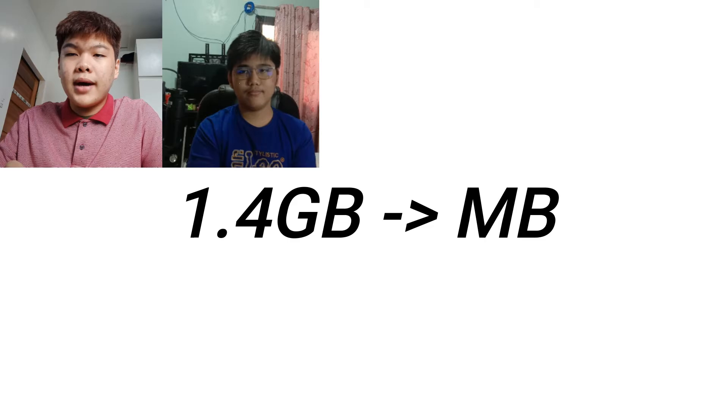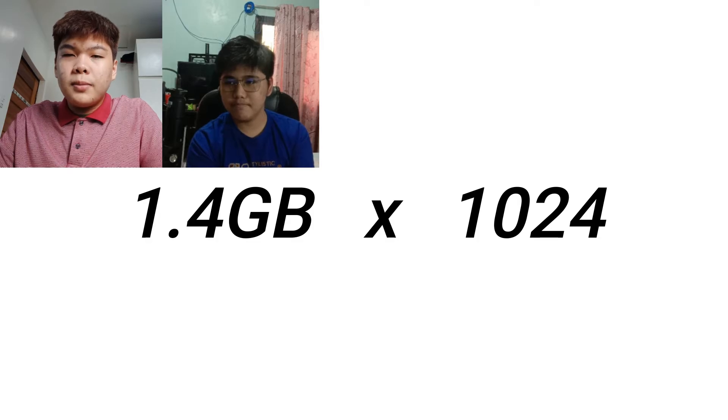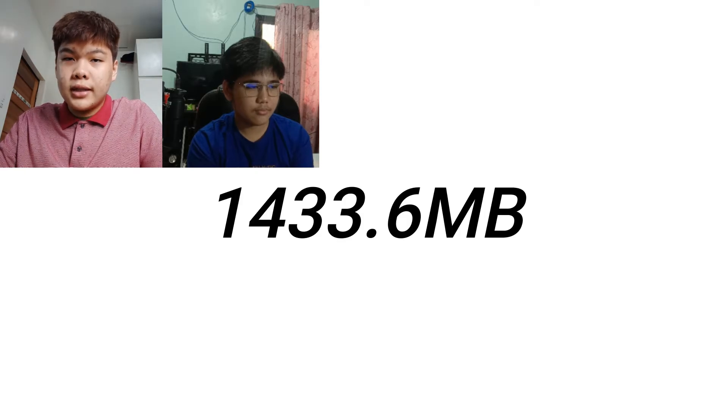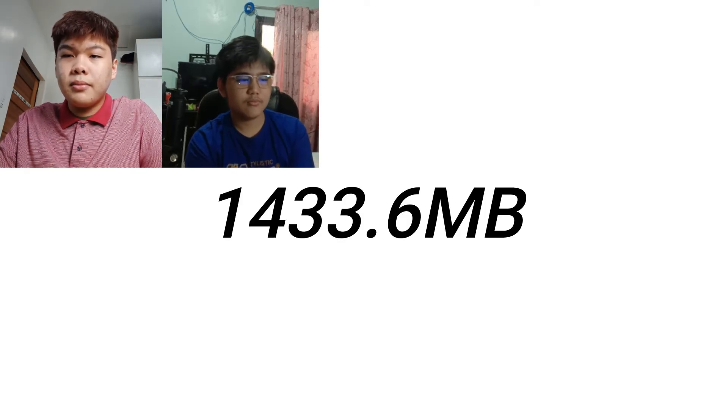For example, 1.4 gigabytes to megabytes. We multiply the 1.4 gigabytes by 1024, and the result is 1433.6 megabytes. And this is how we solve for the bytes.